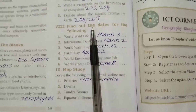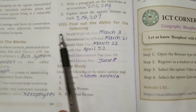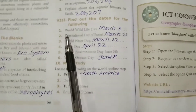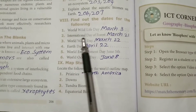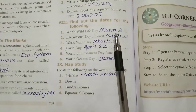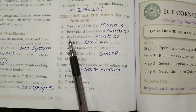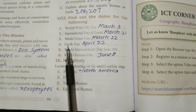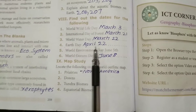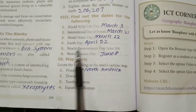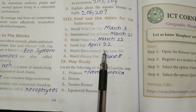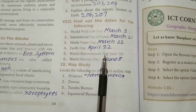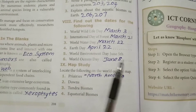Find out the dates for the following: World Wildlife Day — March 3; International Day of Forest — March 21; World Water Day — March 22; Earth Day — April 22; World Environment Day — June 5; World Ocean Day — June 8.